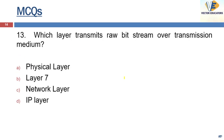Next question: which layer transmits raw bitstream over a transmission medium? The answer is the physical layer. The physical layer provides an interface for physical transfer of data — that is, the cables. It is also called Layer 1.